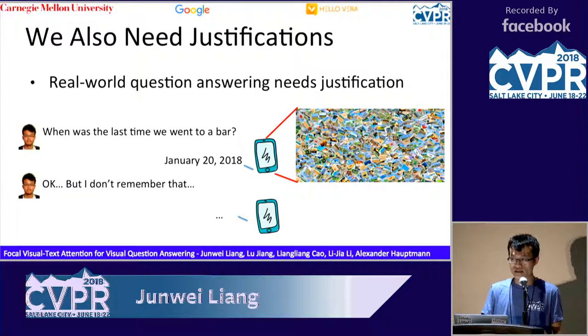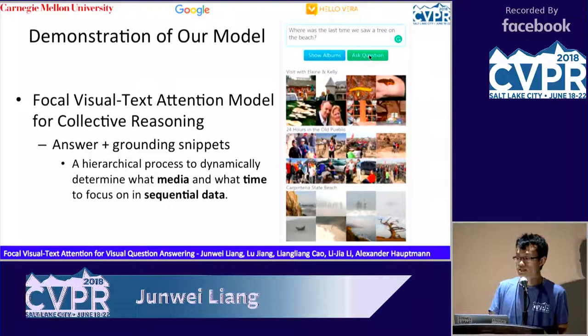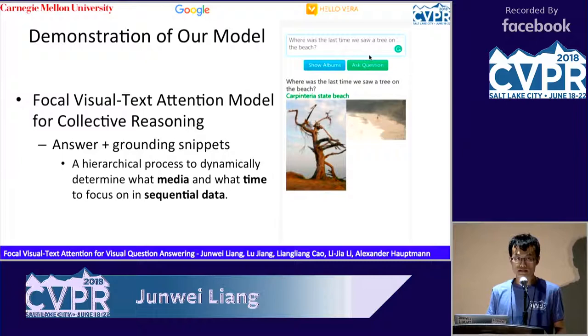So, to achieve these goals, we propose the Focal Visual Text Attention model for collective reasoning. Given the personal collection shown on the right, when the system is asked 'Where was the last time we saw a tree on the beach?', it outputs the correct answer — Carpentaria State Beach — and also the correct justification, which is a photo with a tree on the beach.